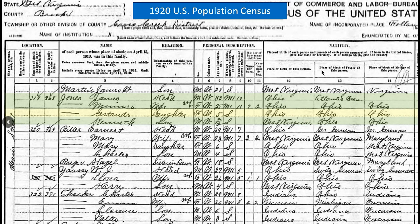The census also shows the place of birth of the father. In this case I found it interesting — James Jones's father was born on the Atlantic Ocean, at least that's the way I read it. The mother and her parents are both born in Ohio, and the children are all born in Ohio except for the son, who is born in West Virginia. That's a quick look at that census record.